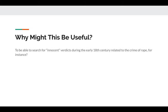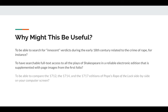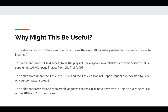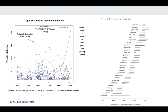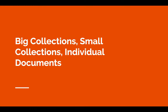You could search for innocent verdicts during the early 18th century related to the crime of rape. You could compare the 1712, 1714, and 1717 editions of Pope's Rape of the Lock side by side on your computer screen. You could search for and then graph language changes in all novels written in English over the course of the 18th and 19th centuries. There's a lot of stuff you can do with XML, and we're only getting into a tiny bit of it.